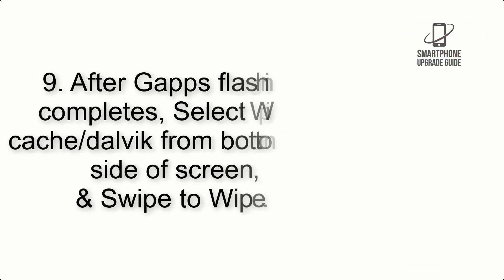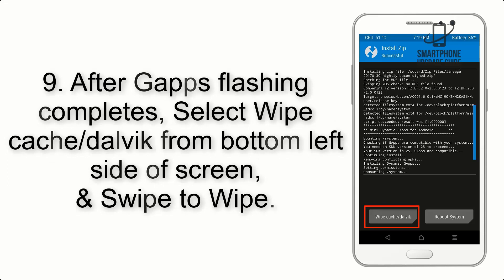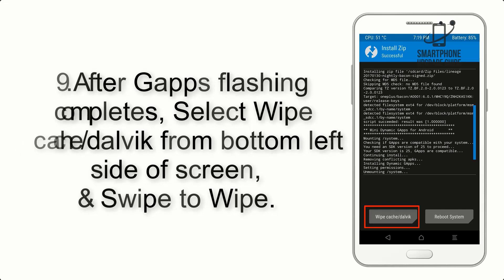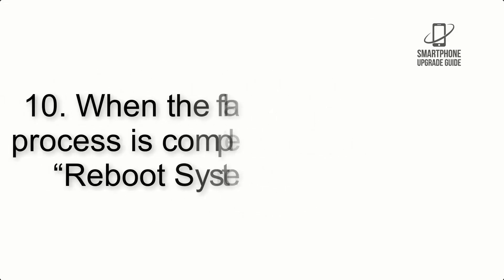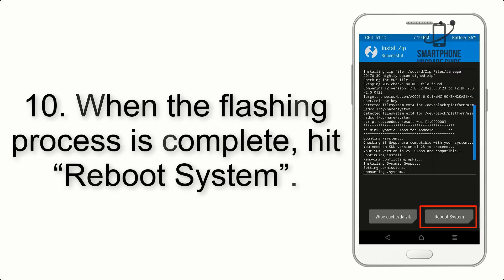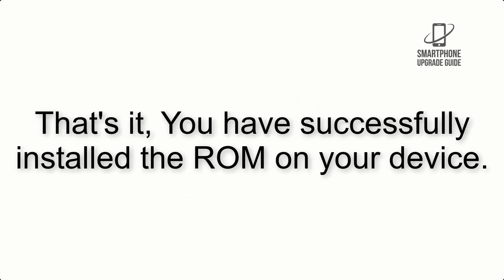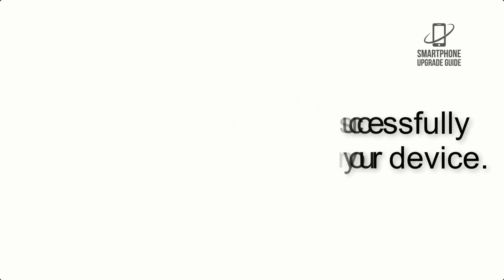Step 9: After GApps flashing completes, select Wipe Cache and Dalvik from the bottom left side of the screen, and swipe to wipe. Step 10: When the flashing process is complete, hit Reboot System. That's it — you have successfully installed the ROM on your device.